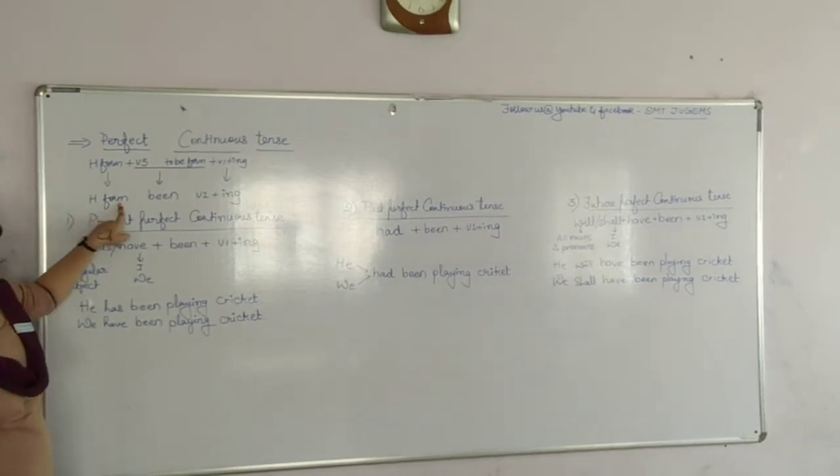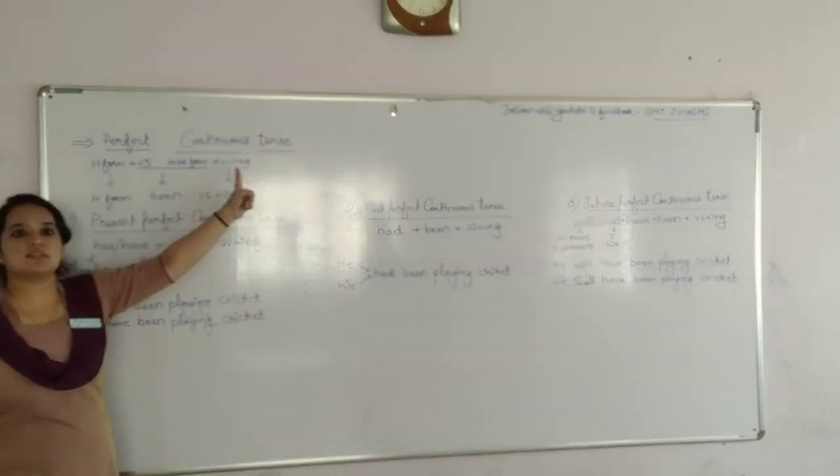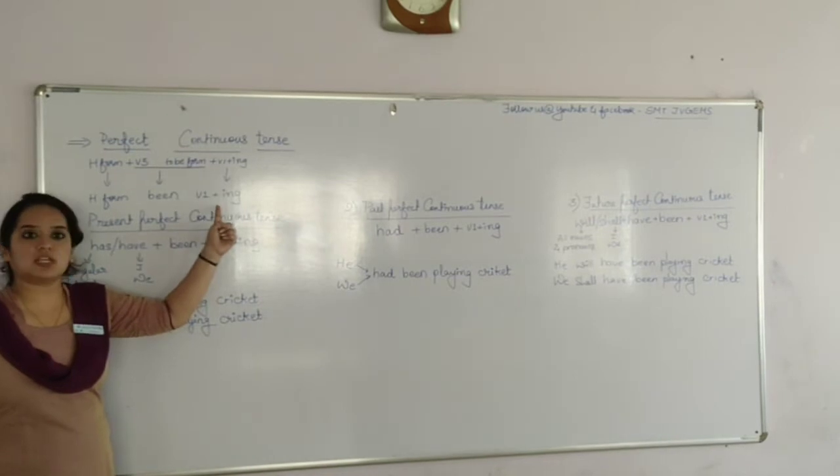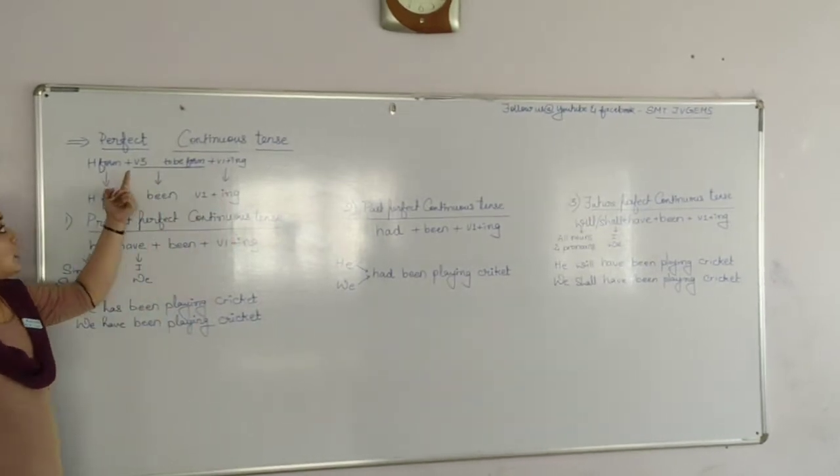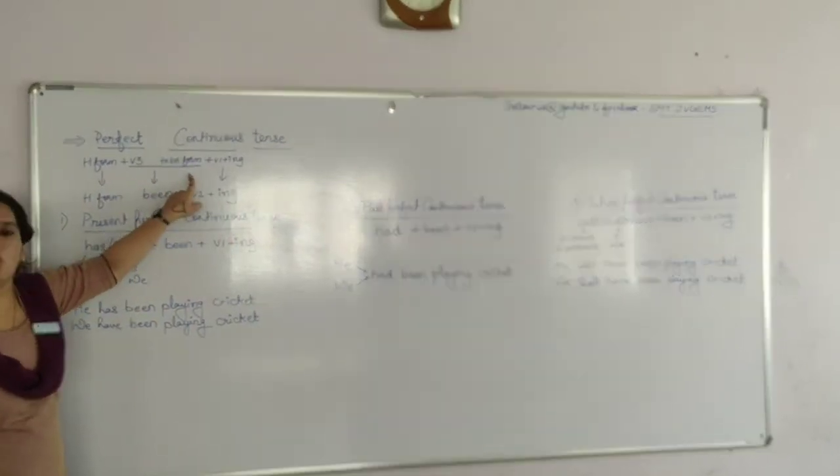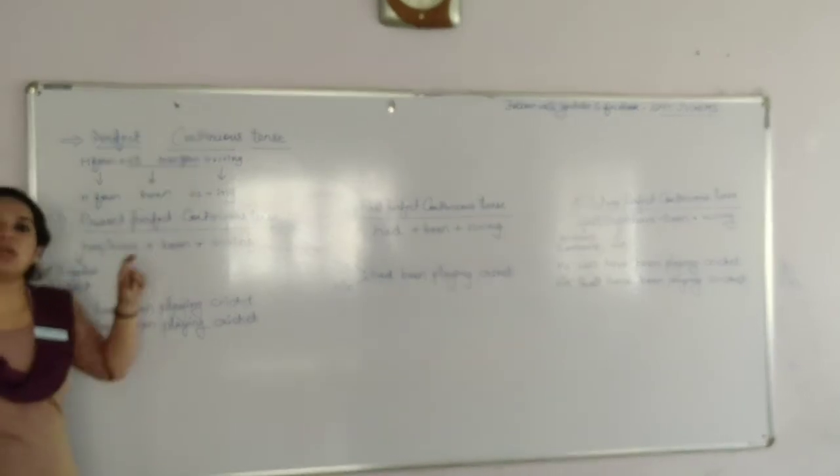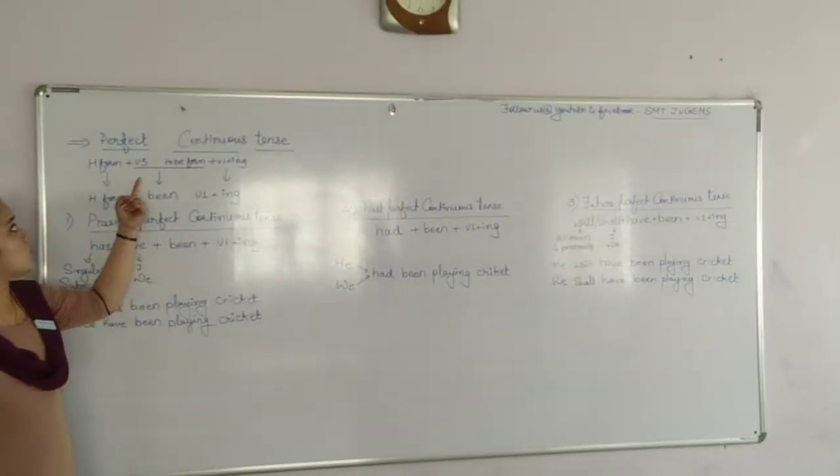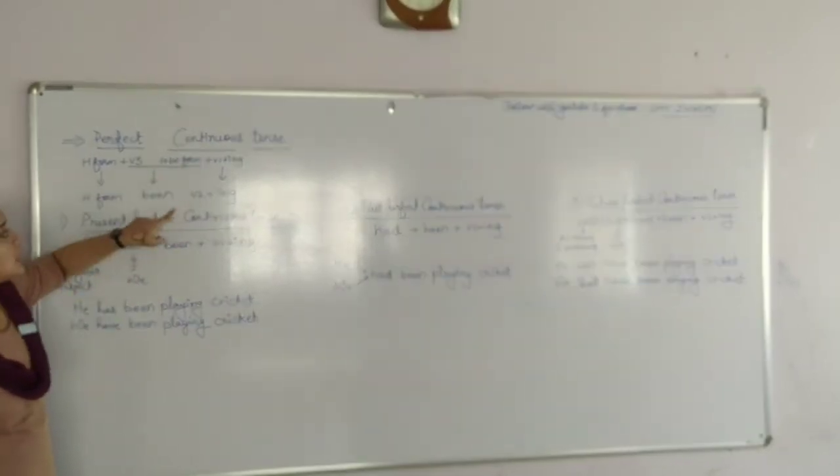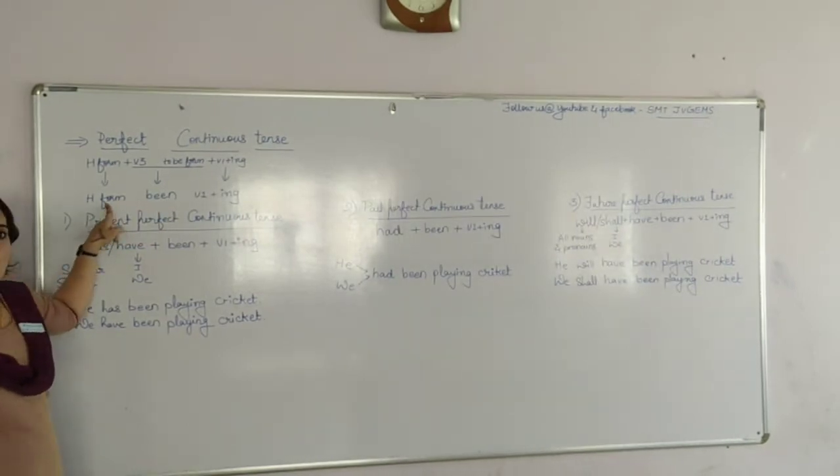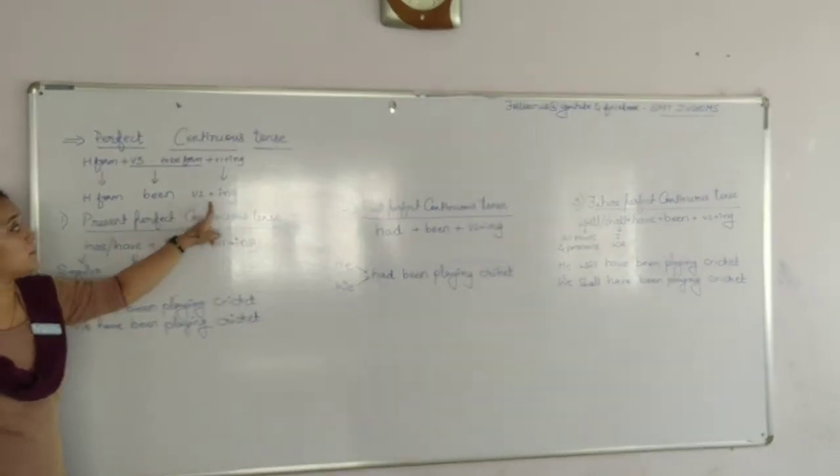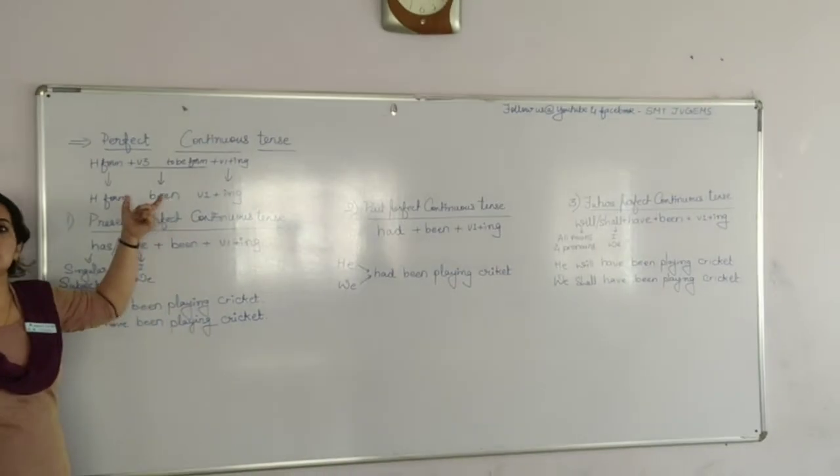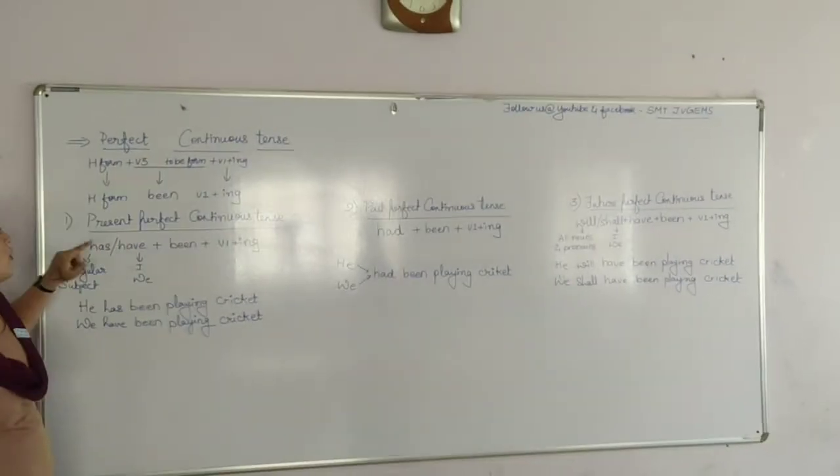We will be using H form and we will be using V1 plus ING. Now, V3 of to-be form. What is to-be form? The base form is be. So, V3 of be is been. So, H form plus been plus V1 plus ING. This is the structure of this form.